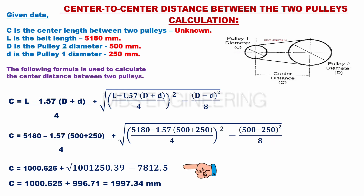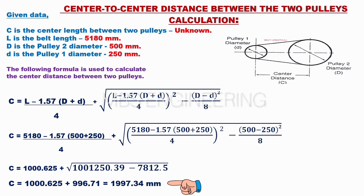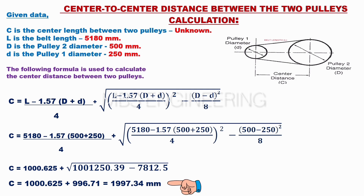Next, C equals 1,000.625 plus the square root of 10,250.39 minus 7,812.5. Next, C equals 1,000.625 plus 996.71 equals 1,997.34 millimeters. Therefore, the center distance between the two pulleys is 1,997.34 millimeters.